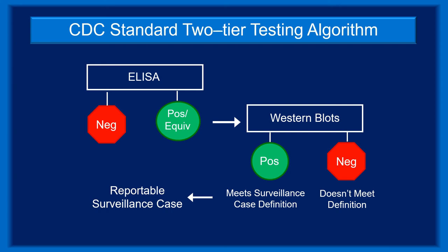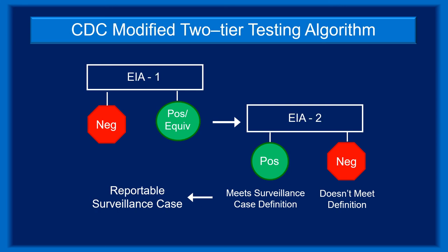This diagram depicts the standard two-tier testing process. Specimens are first tested with an ELISA. Those with positive or borderline results undergo Western blotting. Those that are negative receive no further testing. Western blot patterns are interpreted using the surveillance case interpretation criteria. Positive results satisfy the surveillance case definition for Lyme disease and should be reported. No reporting action is required when Western blotting is negative.